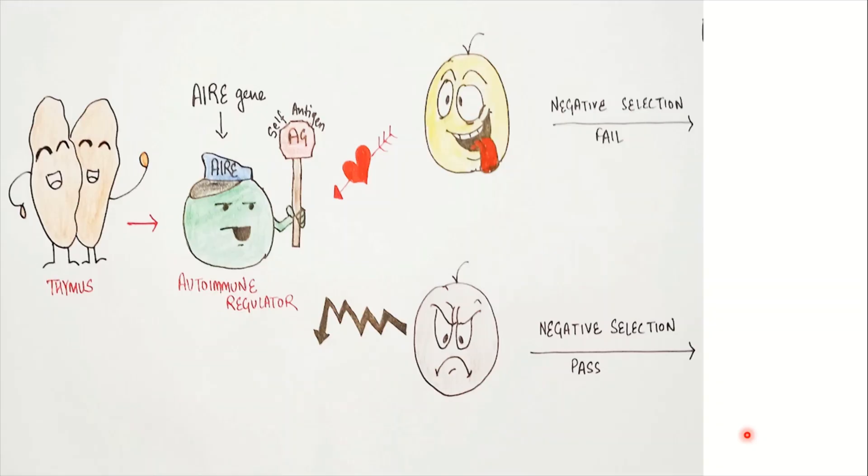The autoimmune regulator protein produced by the epithelial cells of the thymic medulla expose our developing T cells to normal healthy proteins from all parts of the body. If the T cells bind strongly to these self-antigens, they become capable of generating an immune response against our own tissue once released in the circulation. Hence, they are destroyed in thymic medulla. If they weakly bind to these antigens, they pass the negative selection of thymus.